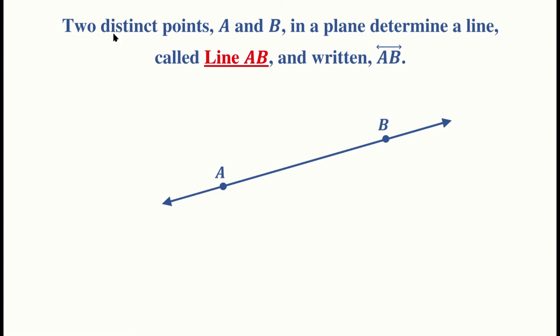When you see 'distinct' in mathematics, that means different. So when A and B are two different points, what do we mean when we say they determine a line? We mean if you draw a line through those two points, it will be the only line that goes through those two points. Any other line through those two points would coincide with this line — it would have the same equation, so for all practical purposes it would be the same line.